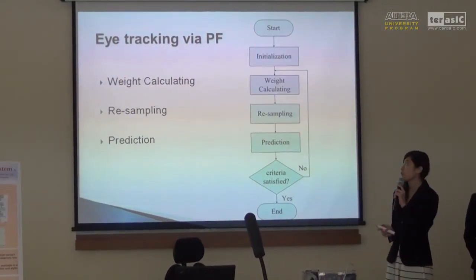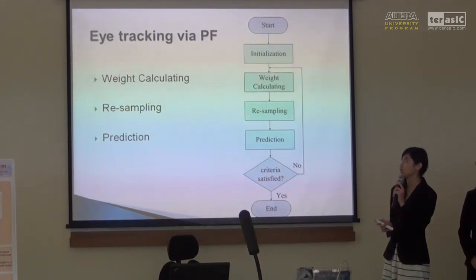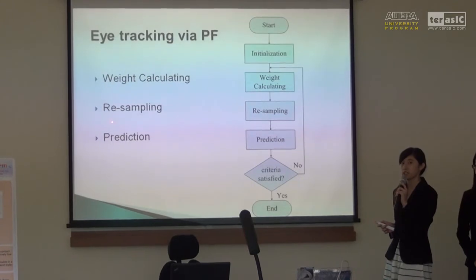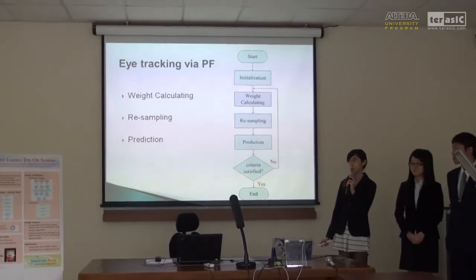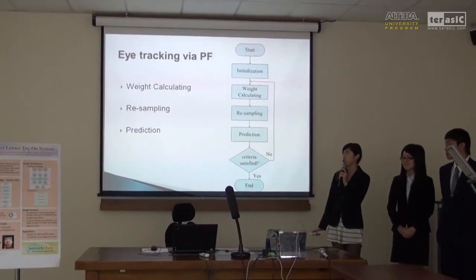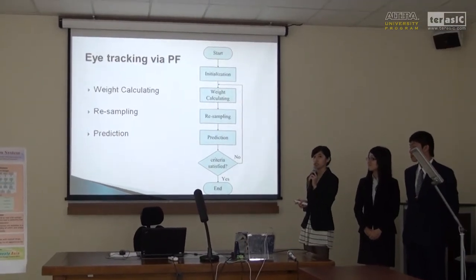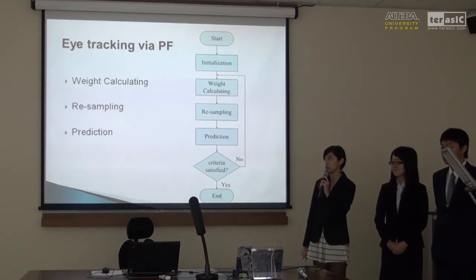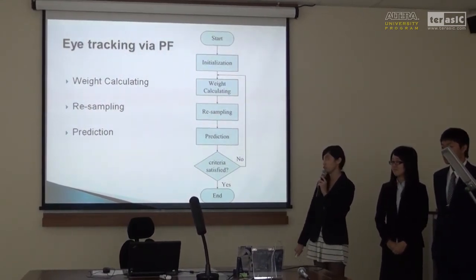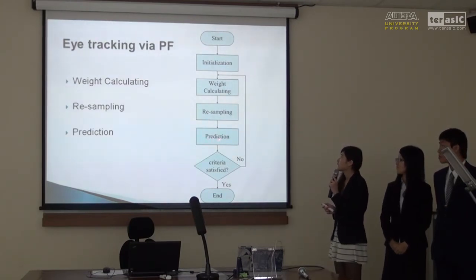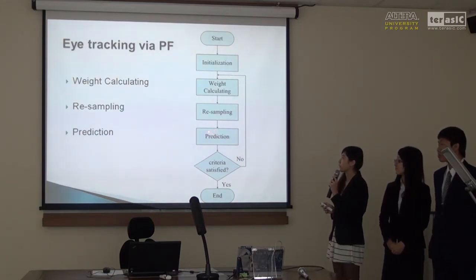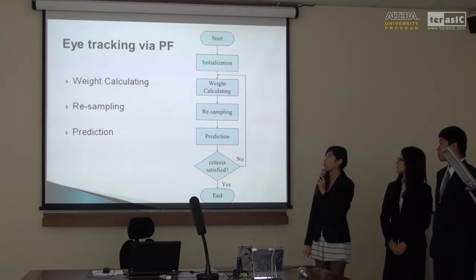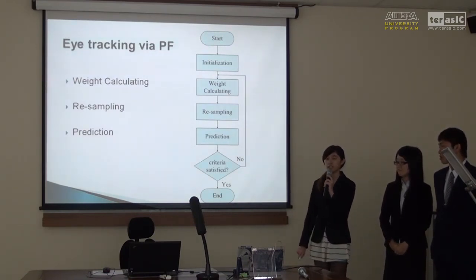First, we divide the LTM panel into two sections and initialize the upper side of each section. After initializing, we calculate the weight of each particle. A resampling procedure deals with the elimination of particles which have small weight and replication of particles with larger weight. During prediction, each particle is modified according to the state model of the region of interest in the video frame. You can see the process of particle filter through the flowchart. We keep doing the resampling and prediction until it satisfies the criteria.